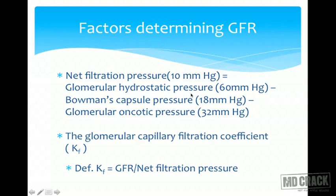The glomerular hydrostatic pressure is quite high at 60 mmHg. The Bowman's capsule hydrostatic pressure opposes filtration. Glomerular oncotic pressure - the plasma proteins present in the glomerular capillaries - also opposes filtration. So net filtration pressure equals 60 mmHg minus Bowman's capsule pressure of 18 mmHg minus glomerular oncotic pressure of 32 mmHg.